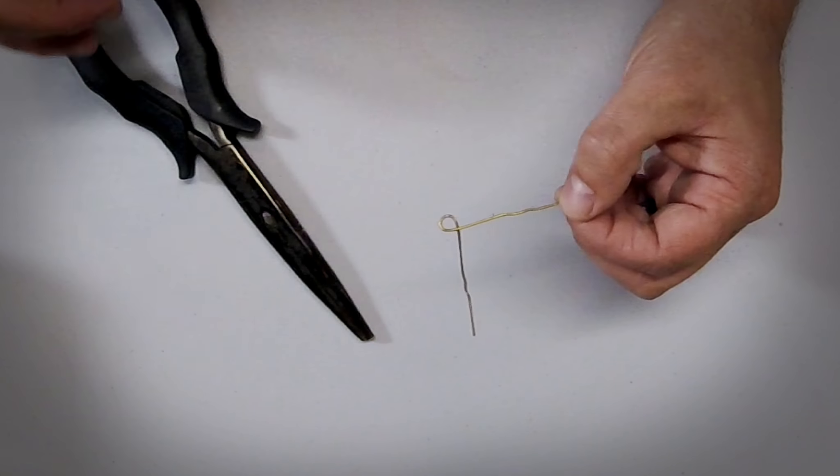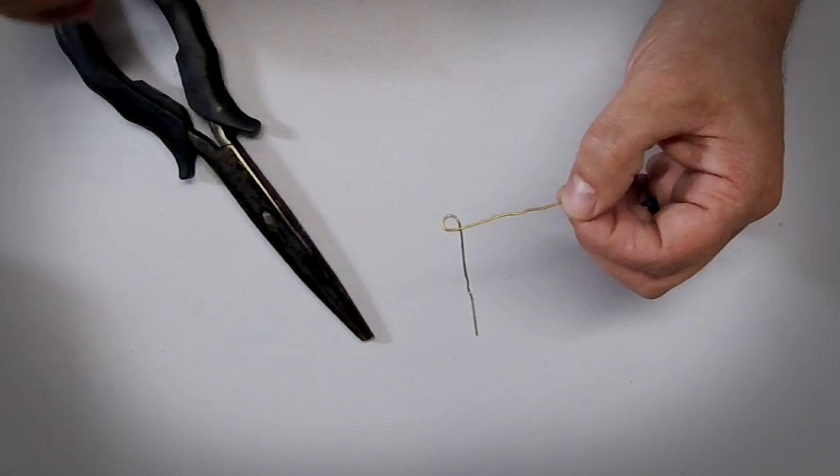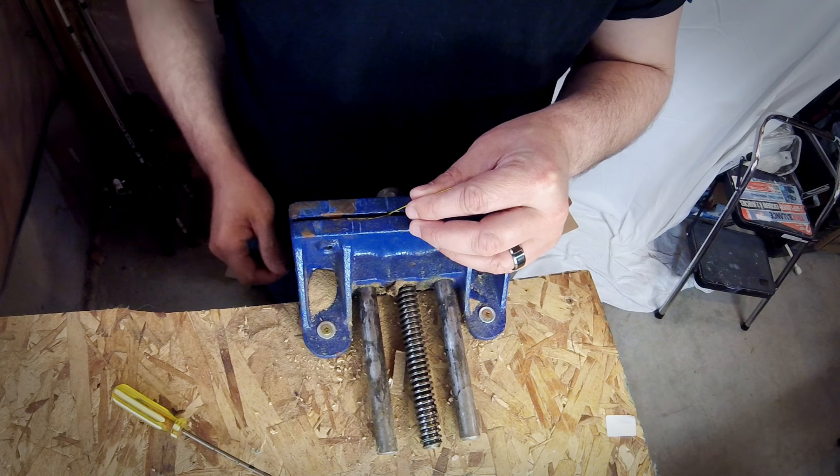So you got this little O-ring or circle. And then we're probably going to want to take this to the vise. All right. So hopefully you guys can see this okay. But what we're going to do is we're just going to put this in the vise here.